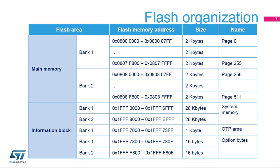This slide shows the flash memory map. There are 256 pages in bank 1, starting from page 0, and 256 pages in bank 2, starting from page 256. The page number MSB corresponds to the bank number. The page number is used in the software procedure to erase a page.